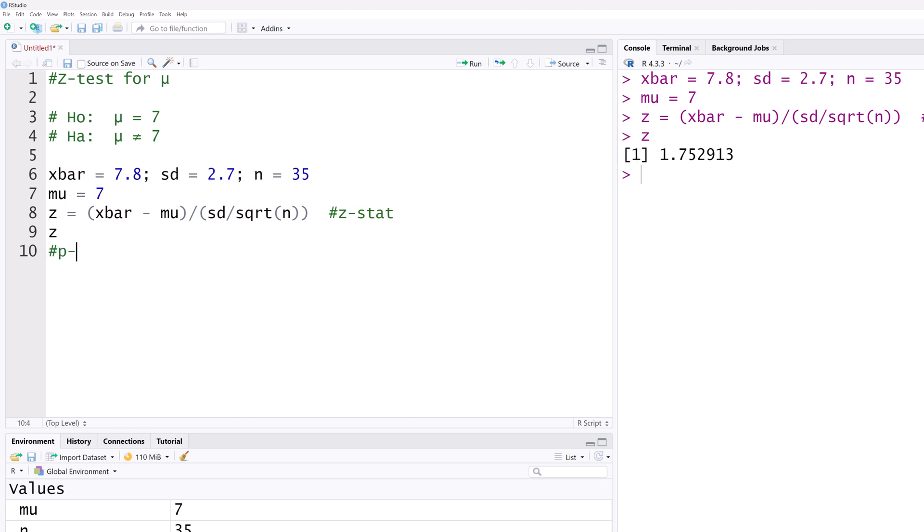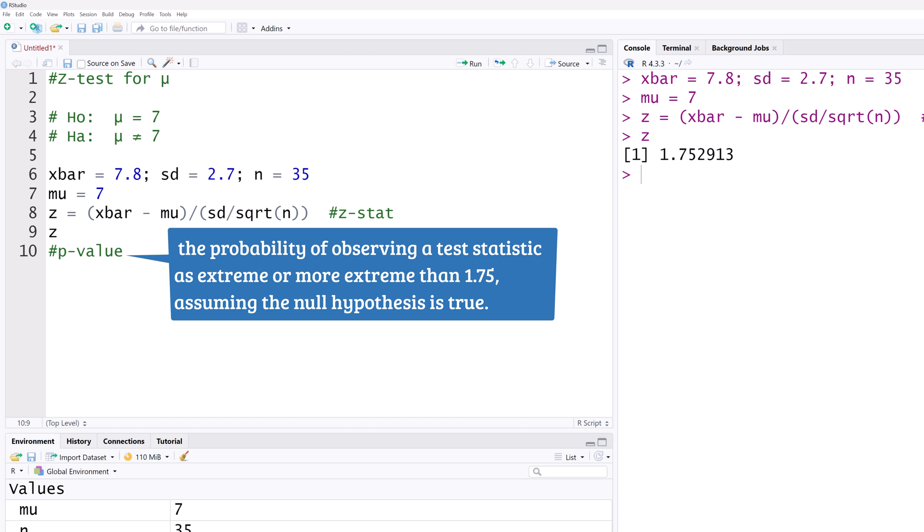Next, I'll compute the P value. The probability of obtaining a test statistic as extreme or more extreme than 1.75 we obtained, assuming the null hypothesis is true.